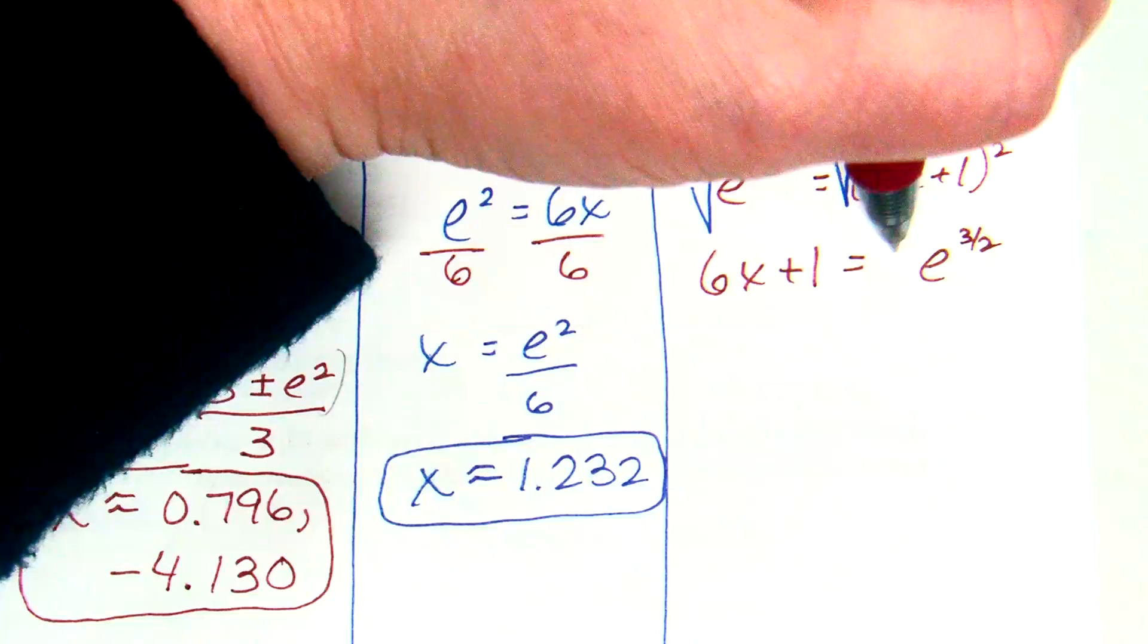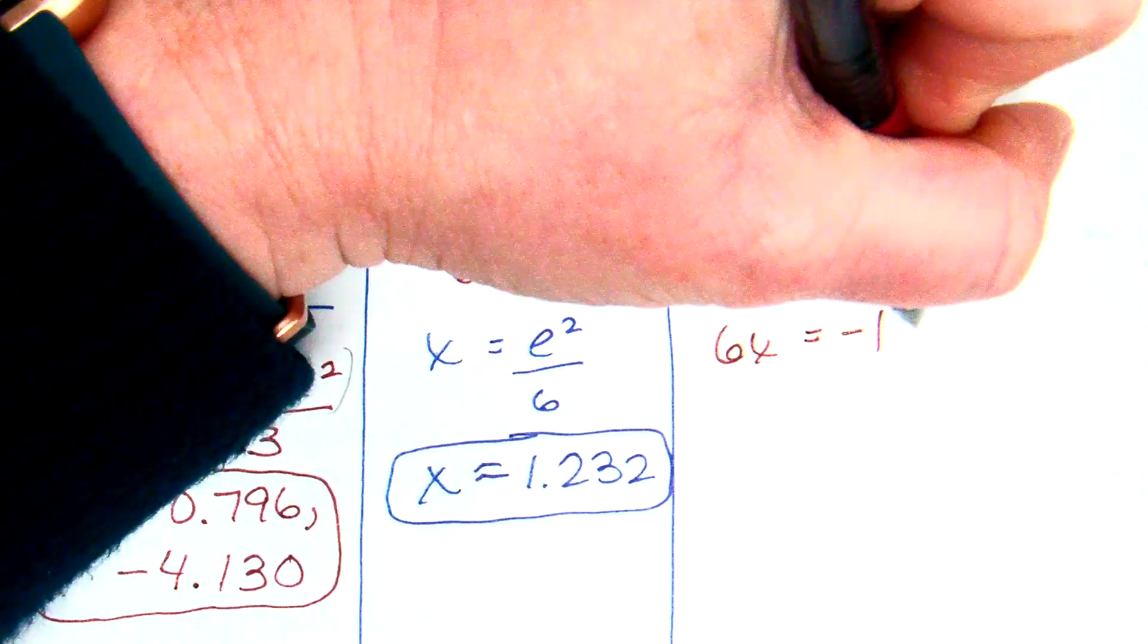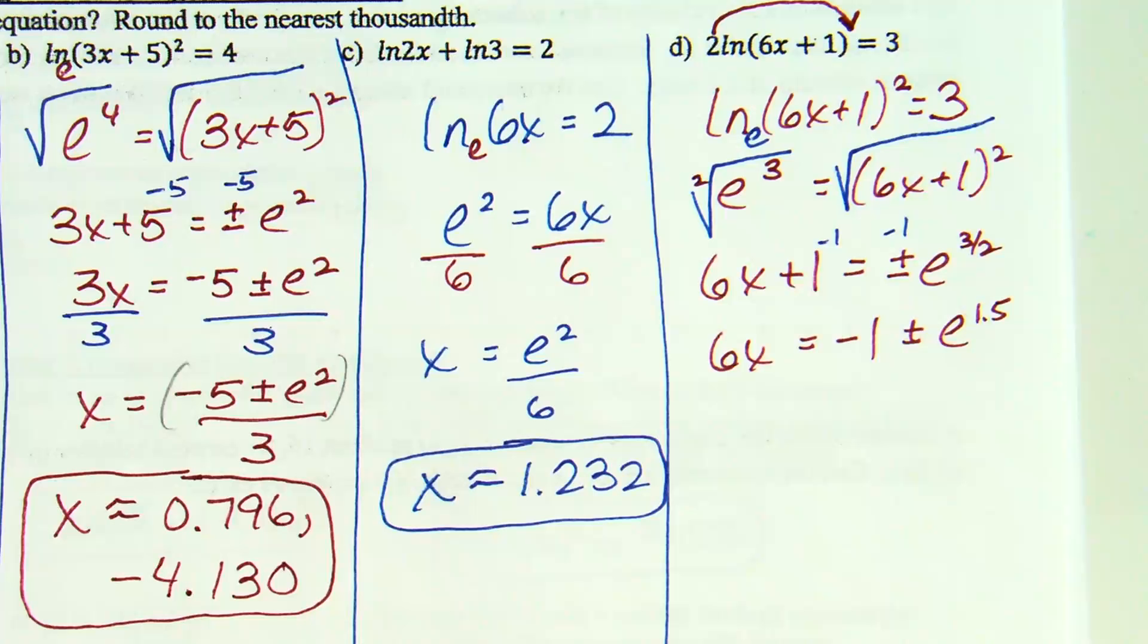If it's 6x plus 1, subtract 1. So, now I have 6x. I'm going to put as negative 1 plus or minus e to the three halves. What is another way to express three halves if you want something easier for the calculator? 1.5. You could say e to the 1.5 if that's easier to use the calculator. And, all of it's easier than the square root of e to the third. If it's 6 times x, divide by 6. And, I have x is negative 1 plus or minus e to the 1.5 all divided by 6.